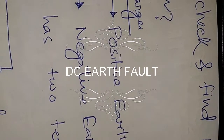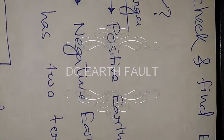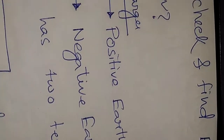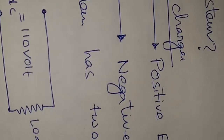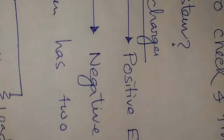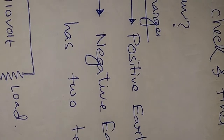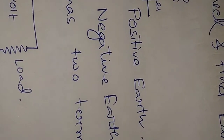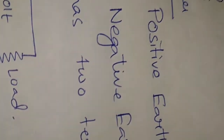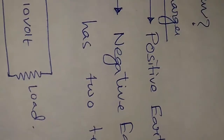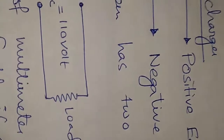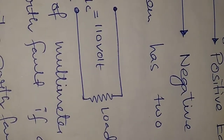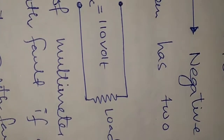Today we will discuss how to check and find the earth fault in a DC system. Battery chargers in substations have two types of earth fault: one is a positive earth fault and the other is a negative earth fault. The DC system has two terminals — one positive and one negative terminal.